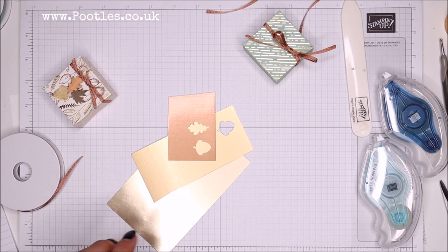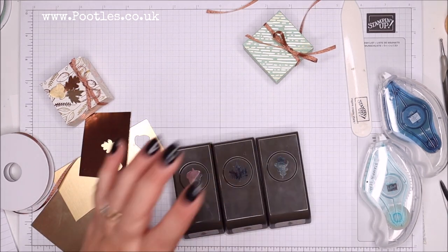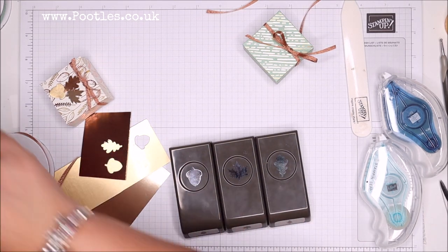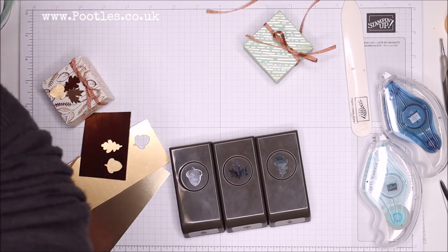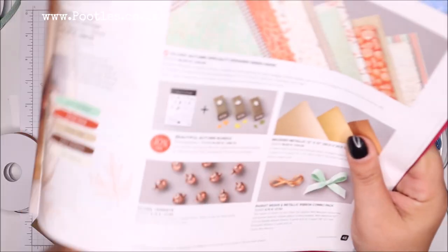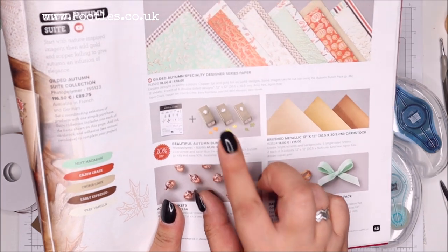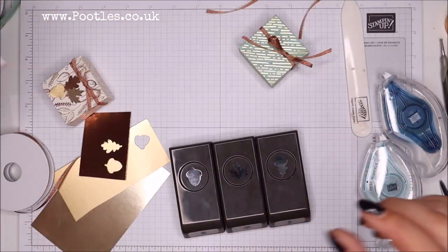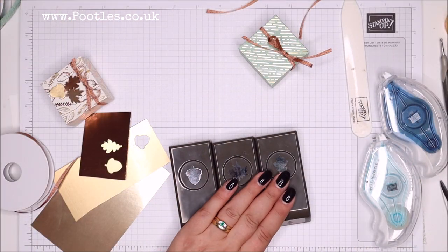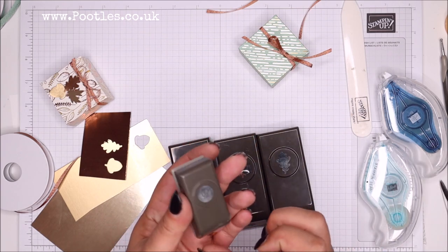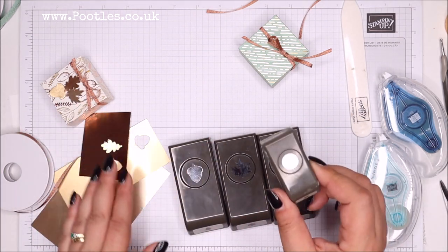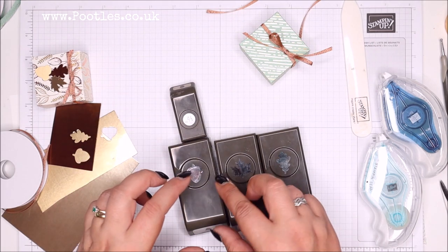I'm going to use my Beautiful Autumn bundle punches which is these three. Again, if you're new to me, in the catalogue it shows the three. We're very used to three punches being the small ones. They're not.